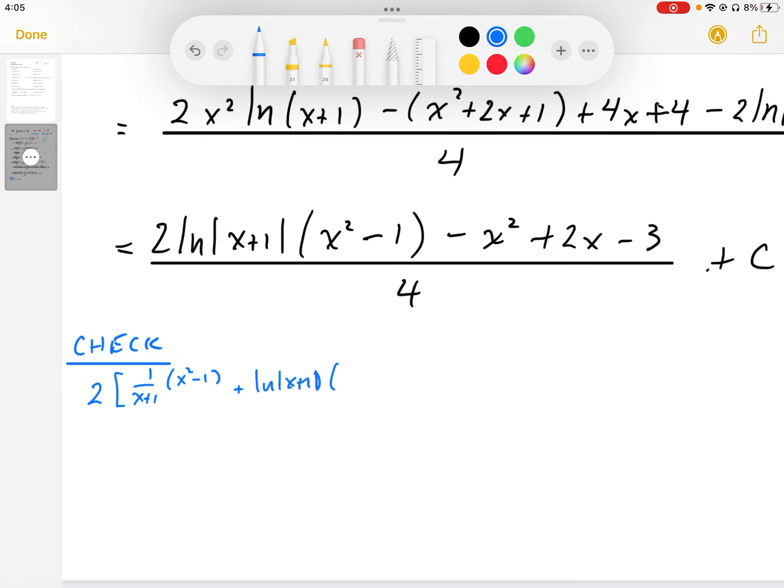and then minus 2x plus 2 plus 0, and that's all going to be times 2 here.